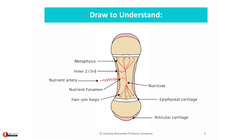The second artery that supplies the bone is the periosteal arteries. They are numerous at places where muscles are attached to the bone, and these enter inside from beneath the periosteum, supplying the outer one-third of the bone.